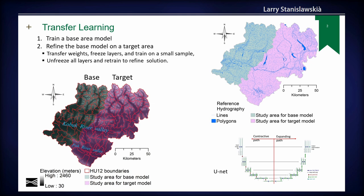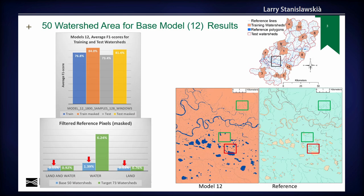We're using the U-Net model to extract hydrography from several layers of IfSAR-derived data. For the base model area, you can see on the right-hand side that the best model was trained with 12 watersheds distributed throughout the 50-watershed area. The F1 scores shown on the left-hand side are about 77% for training data and about 73% for the test watersheds. We filtered the reference data using the shallow water channel depth model because we weren't certain how accurate it is.